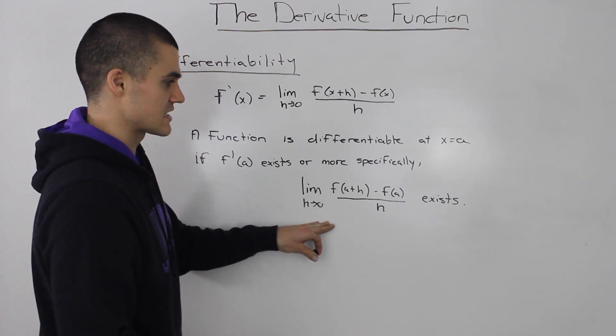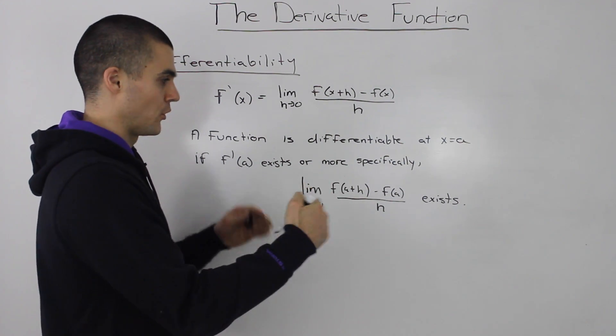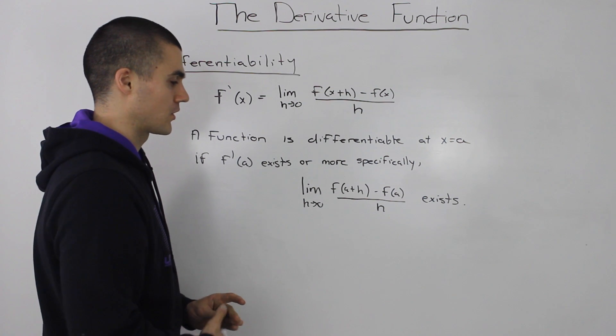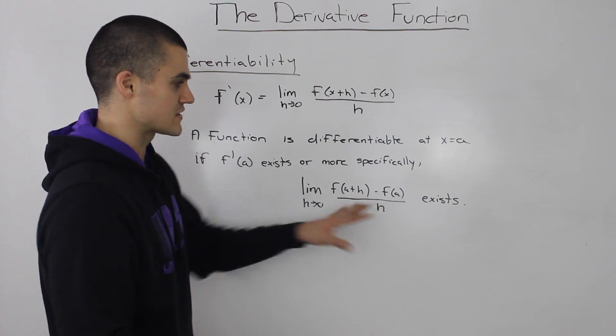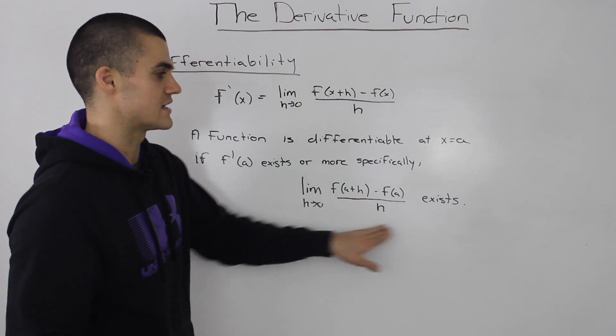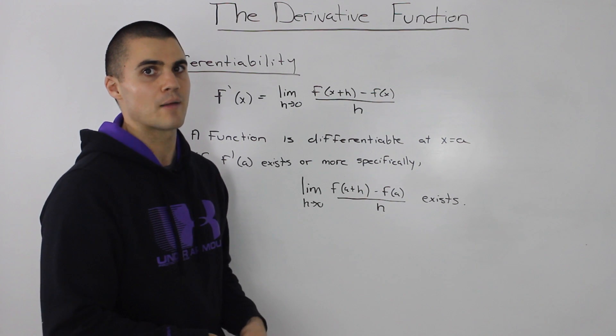So if this limit doesn't exist, if the limit is approaching different values from both sides—if you recall our limit videos on how to tell if a limit exists—if it's approaching different values it doesn't exist, and that means the function isn't differentiable at that point.